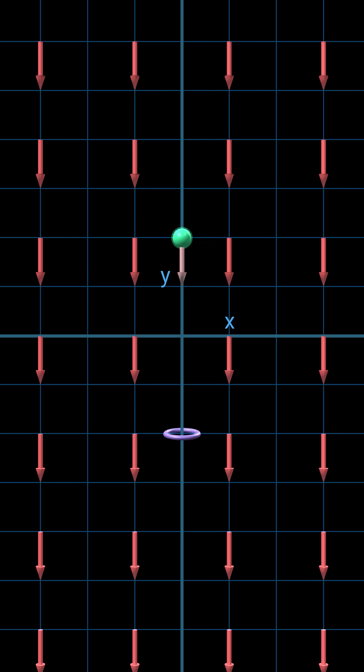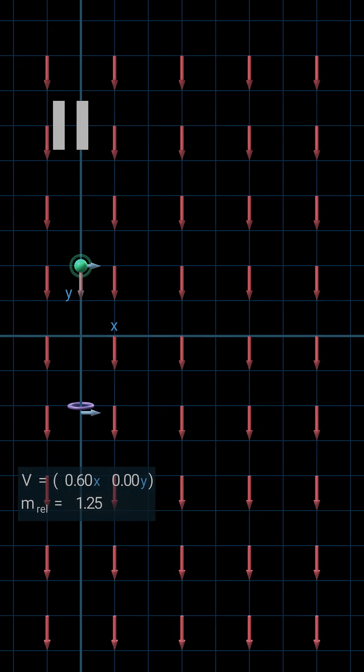Now let's view the same scene from the point of view of an observer moving at 60% the speed of light to the left. The particle and the hoop now have an initial velocity of 0.6 to the right. The particle is pulled downwards, but misses the hoop.